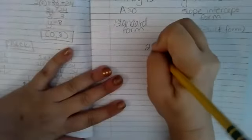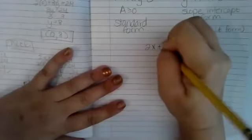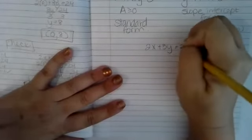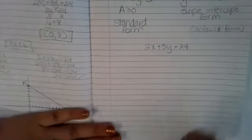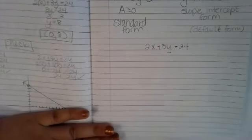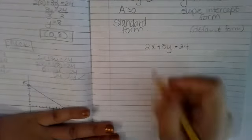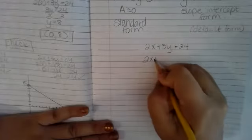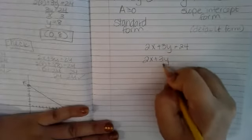The equation we're going to look at is 2x plus 3y equals 24. I'm going to go ahead and rewrite it because I don't like to write on my original problem.